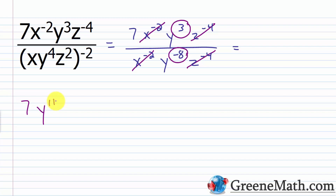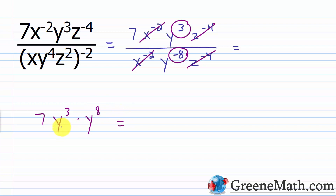Another way to do this: leave seven in the numerator, drag y to the negative eight from the denominator up to the numerator — the exponent changes from negative eight to positive eight. Then use the product rule: y cubed times y to the eighth equals y raised to three plus eight, which is y to the 11th. So seven y to the 11th. There are multiple valid approaches — whether you prefer dragging across the fraction bar and changing the sign of the exponent, or taking the reciprocal of the base and making the exponent positive, either method works.